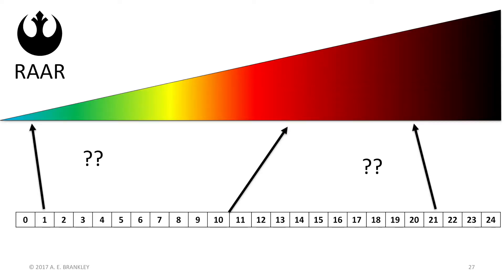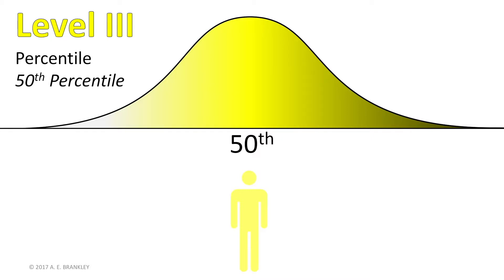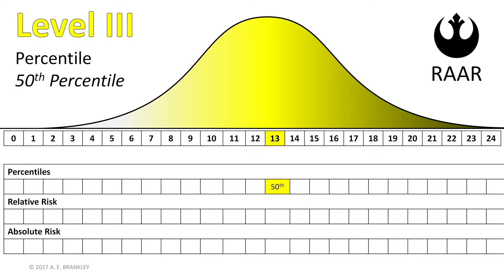The question is: what scores are associated with which standardized risk levels? To figure that out, we need three pieces of information: percentile ranks, relative risk, and absolute risk. Percentiles are important because they define the middle of level 3. The 50th percentile on the RAR is a score of 13. This may be higher than other risk tools due to the fact that it is not uncommon for a rebel to have doubts about the rebellion, thinking it may be easier if they worked with the empire.